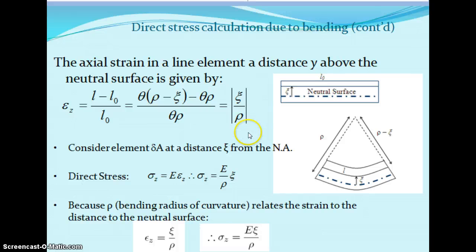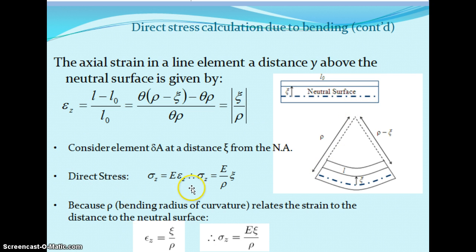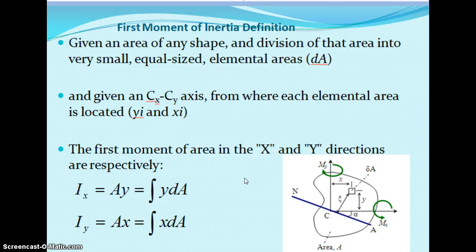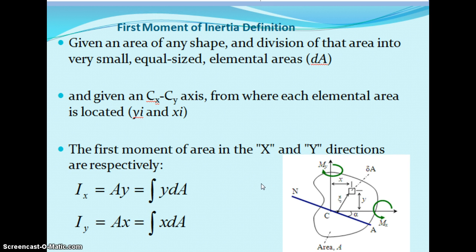From this figure, we can identify the strain. Strain is change in length per original length — here it is ζ/ρ, where ζ is the distance from the neutral axis to the outermost fiber and ρ is the radius of curvature. From this, we can find the bending stress: sigma z equals E·epsilon_z, which equals E·ζ/ρ. These are the formulas we identify and substitute. Before finding the bending stress, the moment of inertia definitions are very much required, as already learned in previous classes — we will recall them once again.